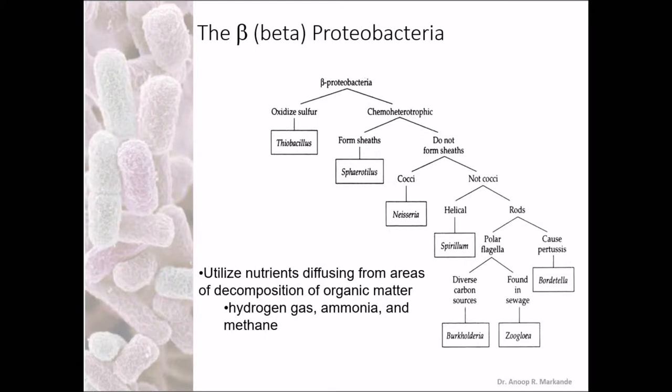Now we are coming to the Beta Proteobacteria. Continuing with the Proteobacteria group — these organisms utilize nutrients diffusing from areas of decomposing organic matter. They are known to be hydrogen gas, ammonia, and methane producers or utilizers, depending on where they are and what they are doing.